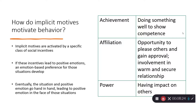So how do implicit motives actually motivate behavior? Implicit motives are activated by a specific class of social incentives. We find ourselves in certain situations that lead to positive emotions, and we develop an emotion-based preference for those situations. If being in a high affiliation situation leads us to feel good, we seek out more of those situations. Eventually the situation and the positive emotion go hand in hand — just being in a standard of excellence situation is enough to make us feel really positive.